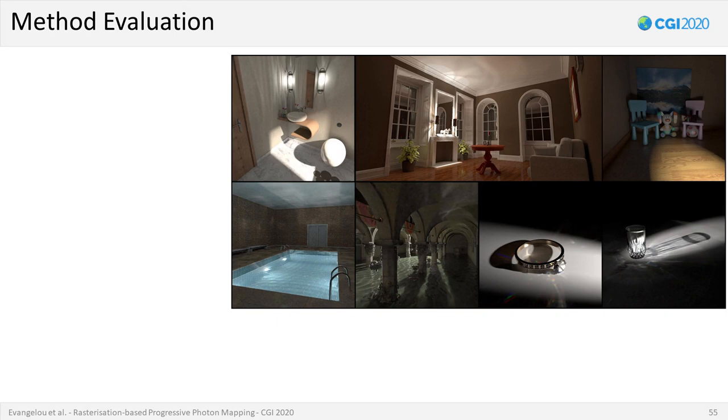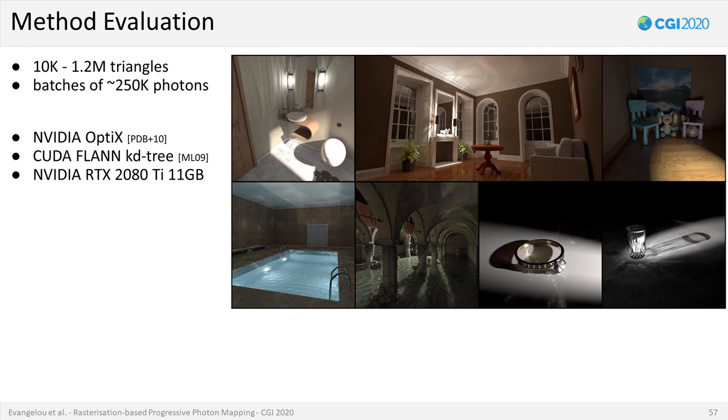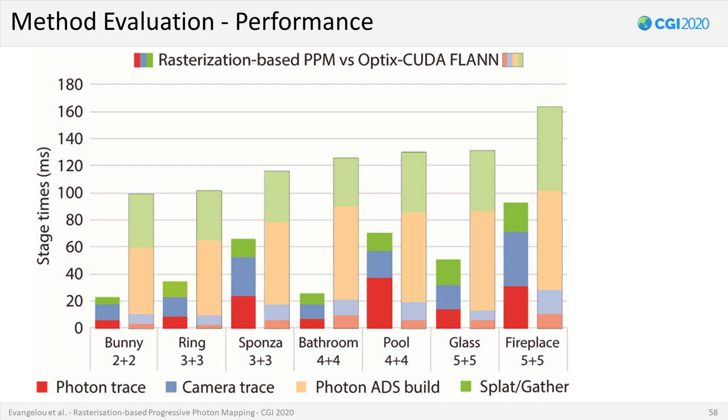For the evaluation part of our method, we performed experiments on seven different scenes with geometry complexity ranging from a few thousand to over a million triangles. As for the photon emission size, we employed batches of approximately 250,000 photons for each test case. In order to compare the performance and quality of our method, we implemented a reference probabilistic progressive photon mapper using the OptiX ray tracing framework and CUFLANN, a GPU-accelerated library for nearest neighbor searches via KD trees. For both implementations, we ran tests on an NVIDIA RTX 2080.